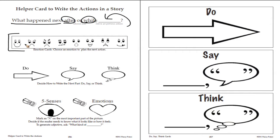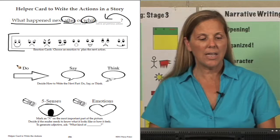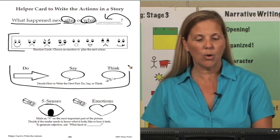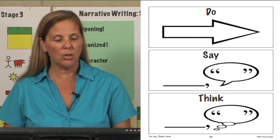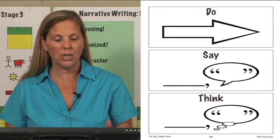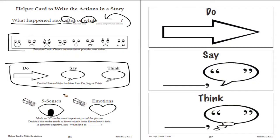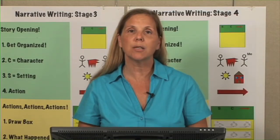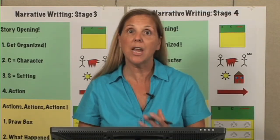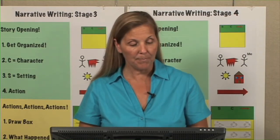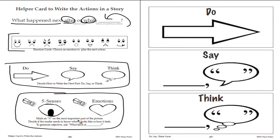The next part shows the different emotion faces. That's optional. If kids can't figure out what happened next, they could pick an emotion card to make it interesting. They would decide how they're going to write this. They have the choice of do, say, or think. Do is an action, say and think is where you're using dialogue or thoughts. Finally they can go back in their sentence and see which part is important to describe.